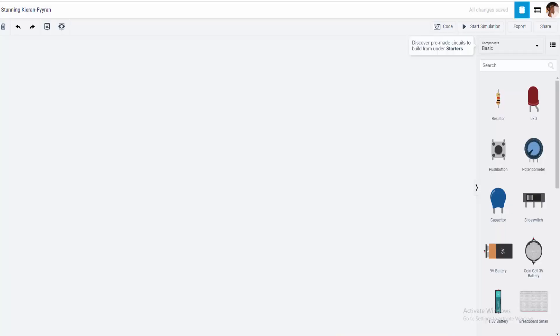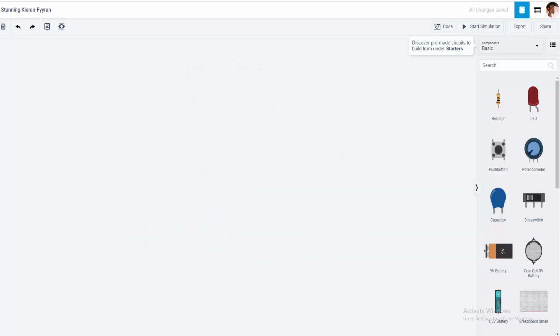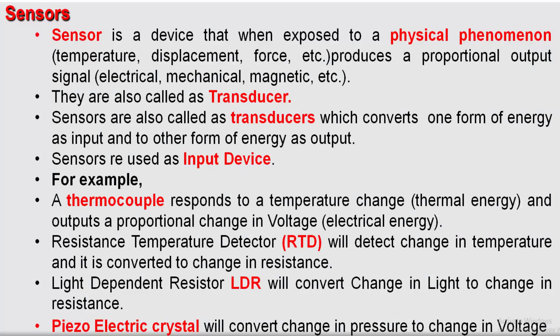Hello friends, welcome to the next lecture in the series of Arduino. Today we will be speaking about sensors. Up till now what we have used were the output devices, also called as actuators — we used actuators like LED and motor. Now we will be seeing something with the sensors. Sensors are basically an input device, like actuators were the output device. They give input to the Arduino.